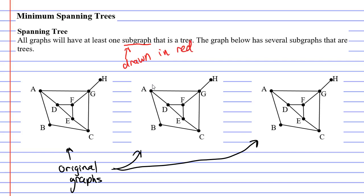Okay so we'll start with one. If I start at H, connect it to G, connect this to F and connect this one to E and D. This red graph is a subgraph of the original black graph that I had.